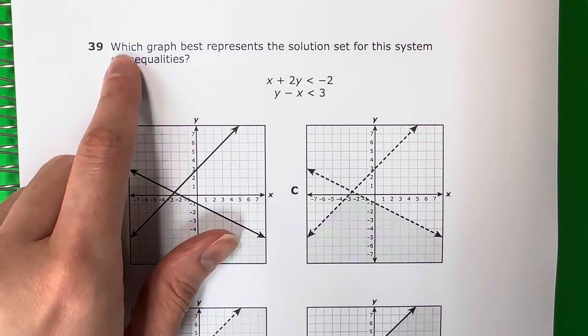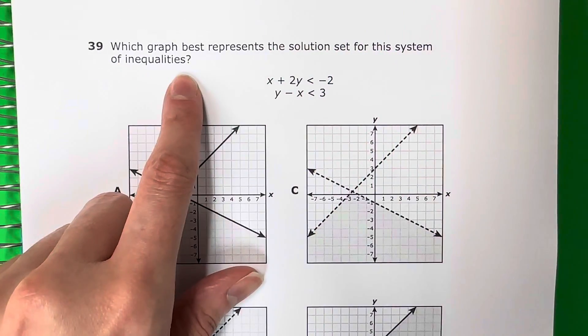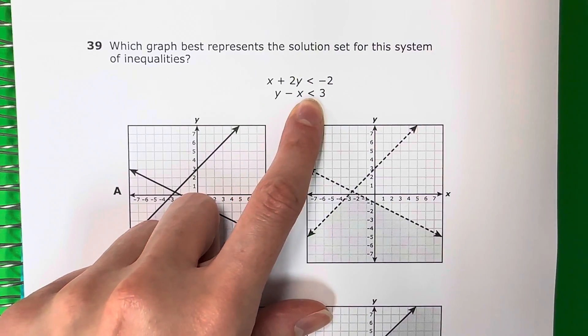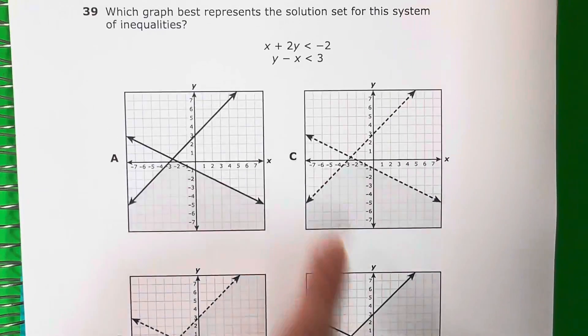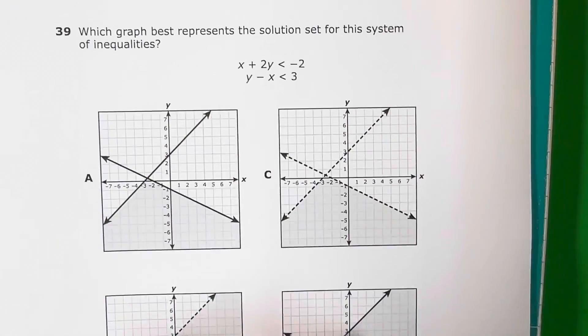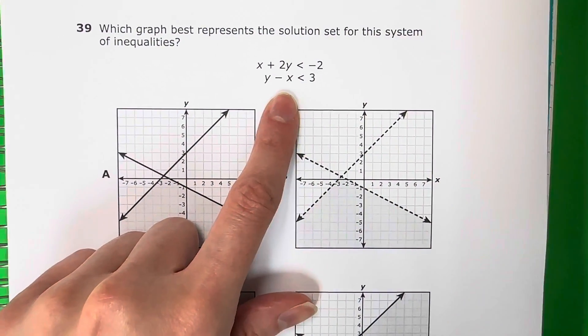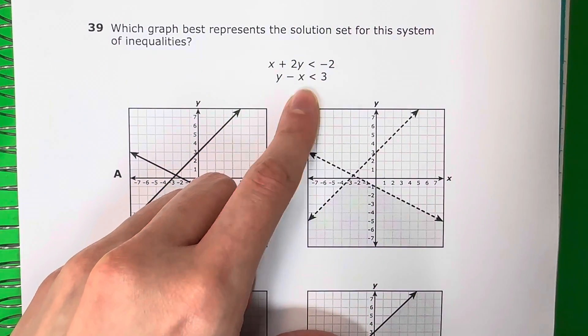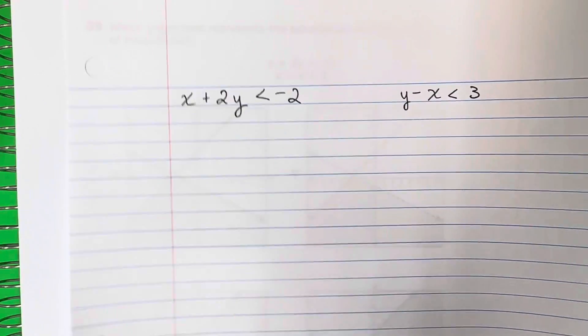Question 39. Which graph best represents the solution set for this system of inequalities? X plus 2y is less than negative 2, and y minus x is less than 3. So I need to see which of these graphs is for this system of inequalities. The first thing that I'm going to do is change these to slope-intercept form. I will be doing that on a different paper.